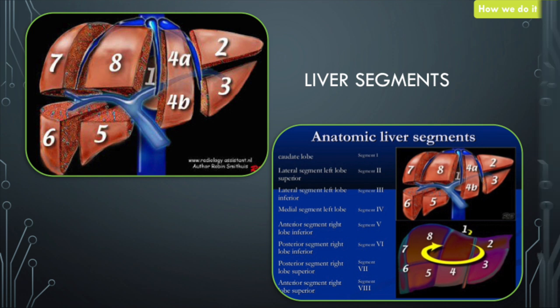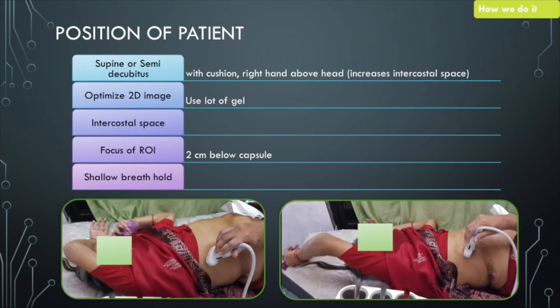Patient positioning is very important. We position the patient supine or semi-decubitus with the hand above the head to increase the intercostal space. We need a very good 2D image — if we do not get a good 2D image, the propagation of shear waves will not be good and we won't get good readings. We go in through the intercostal space, avoid rib shadows, get a good 2D image, and then proceed. We ask the patient to do a shallow breath hold — not deep inspiratory or deep expiratory, as this hampers the image. We target the focus roughly 2 centimeters below the capsule, because the sweet spot of the ROI is roughly 4 to 5 centimeters from the transducer surface.